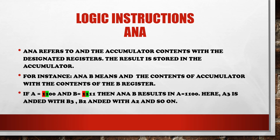If A equals 1100 and B equals 1111, then ANA B results in A equals 1100. Here A3 is ANDed with B3, as shown by the red color; B2 is ANDed with A2, shown by the green color, and so on.